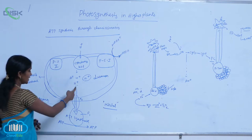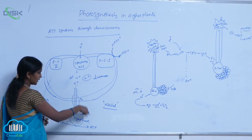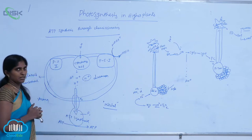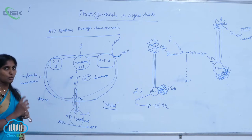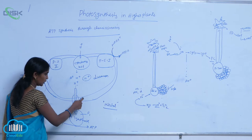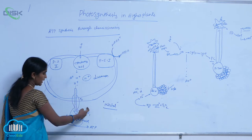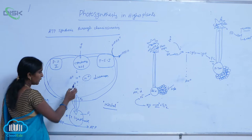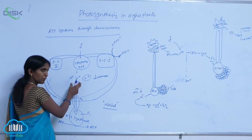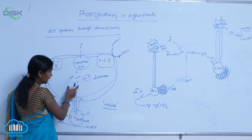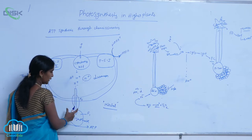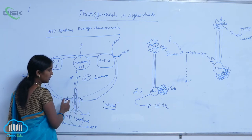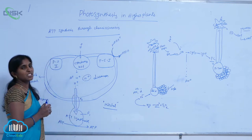The proton pathway is created by the coupling factor. The coupling factor has two parts: one is F0 and another one is F1. To pump the protons from lumen to stroma, F0 works as a proton channel.